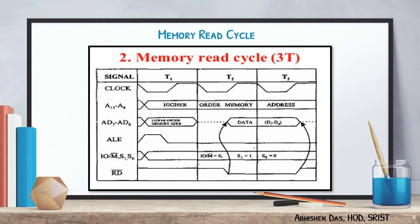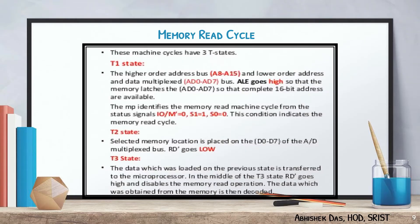This is the timing diagram of the memory read cycle, which consists of 3T-states. In T1 state, the higher order address bus and lower order address bus are data-multiplexed, and ALE goes high. In T2 state, the selected memory location is placed on D0 to D7 of the address-to-data multiplexed bus, and read bar goes low. In T3 state, the data which was loaded on the previous state is transferred to the microprocessor.